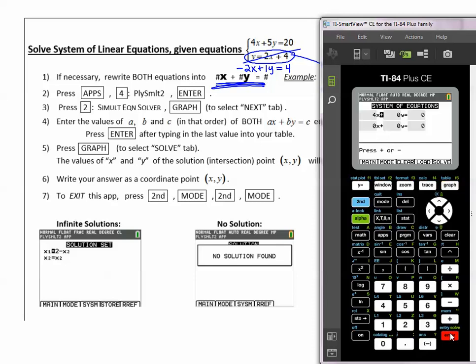4 before the x, 5 before the y, and then 20. Enter. The second equation starts with a -2. 1y, positive 1, and ends with a 4. The constant is 4.